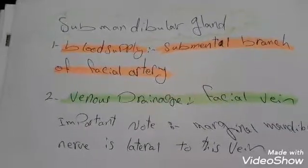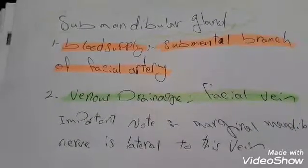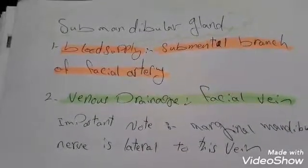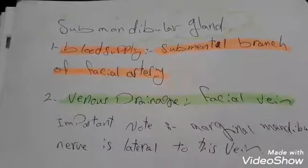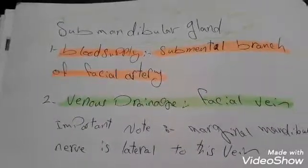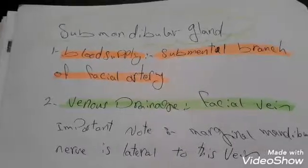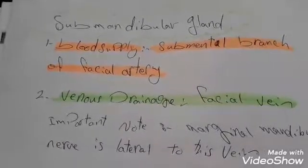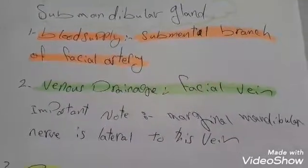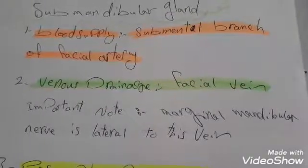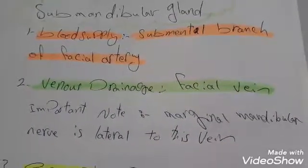Hello everyone. Still talking about the salivary glands, and in this video we will discuss the submandibular gland. The blood supply of the submandibular gland comes from the submental branch of the facial artery. The venous drainage is through the facial vein, and we should notice that the marginal mandibular nerve is lateral to the facial vein.